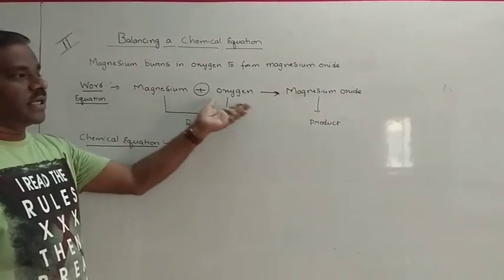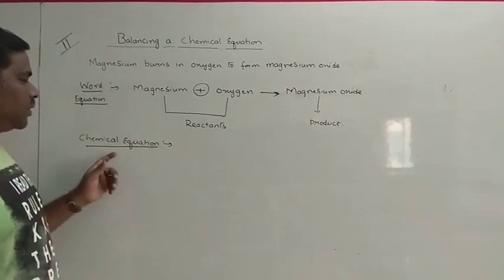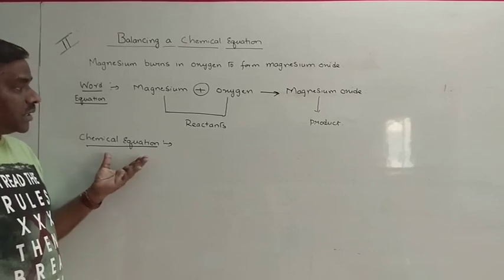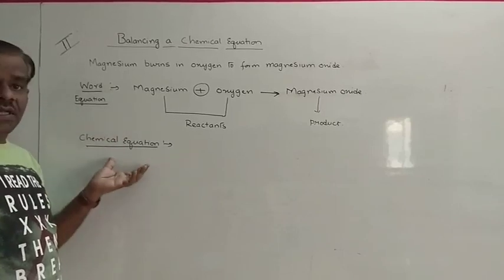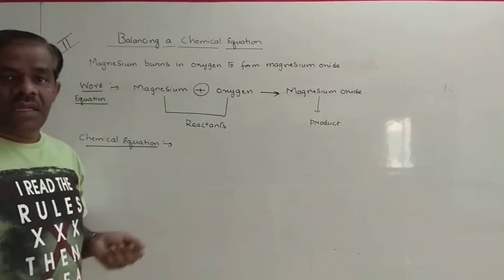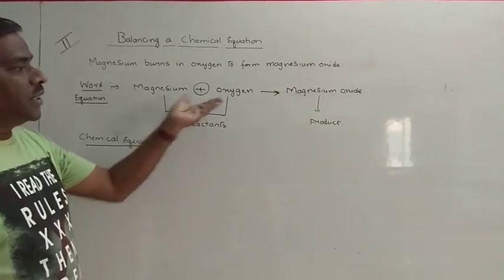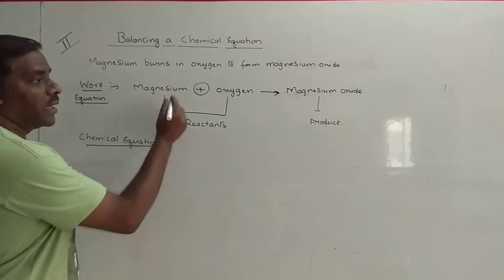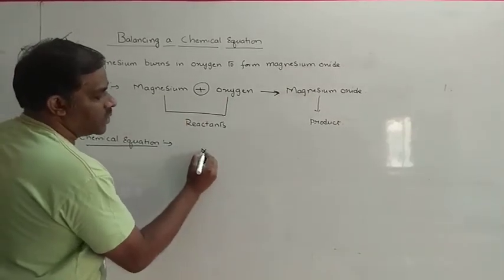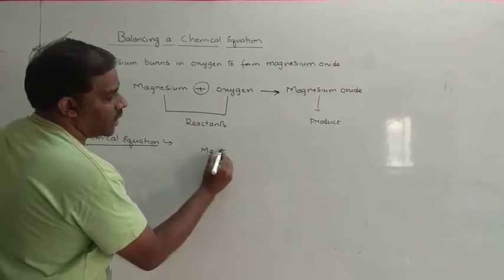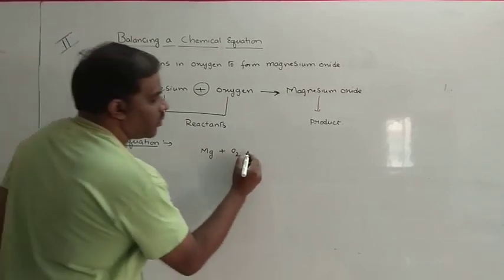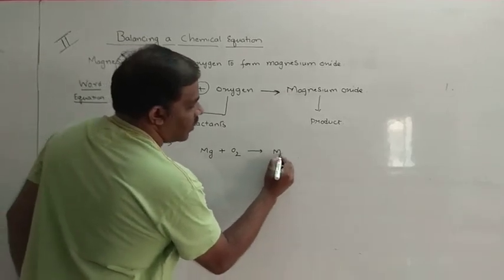The plus symbol is used to separate the reactants and the arrow indicates the formation of the product. Now this is also hectic to write as a word equation, so we represent it in the form of a chemical equation. In a word equation we represent the equation in words, whereas we can reduce it further by writing the concerned symbols — for example, Mg plus O2.